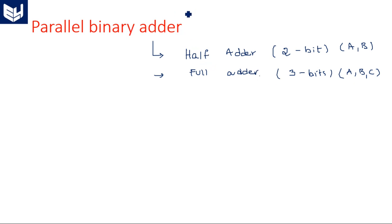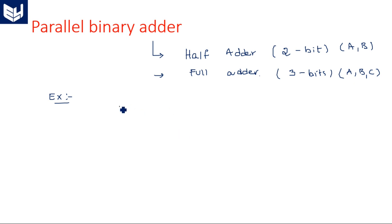What do you mean by parallel binary adder? Half adder is for two bits and full adder is for three bits. Now suppose I give you two numbers: A consisting of four-bit size and B consisting of four-bit size.